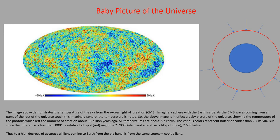So this image demonstrates the temperatures of the sky from the excess light of the creation, the CMB. So over here, imagine a sphere with Earth inside. This is Earth. So as the CMB waves are coming to us from all different parts of the universe, imagine those waves touching this spherical sensor which is picking up the temperature of those waves. Now flatten that sphere out and you've got this image here. So this image is in effect a baby picture of the universe showing the temperature of the photons which left the moment of creation about 13 billion years ago.